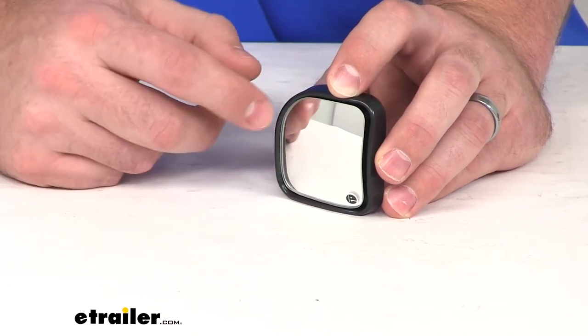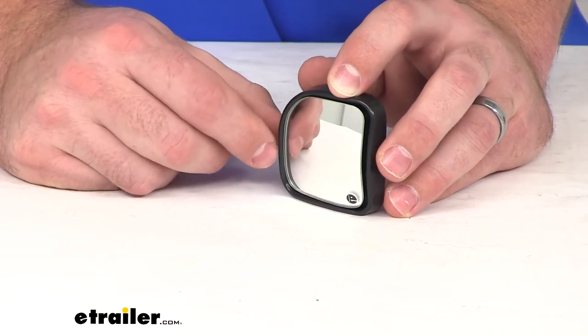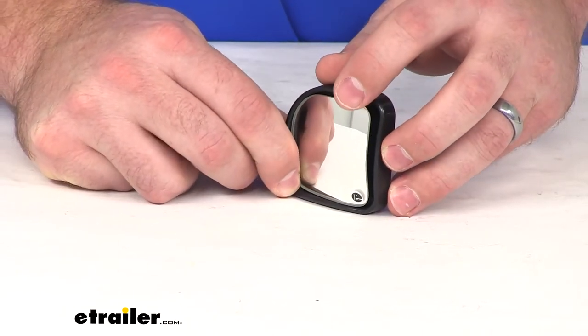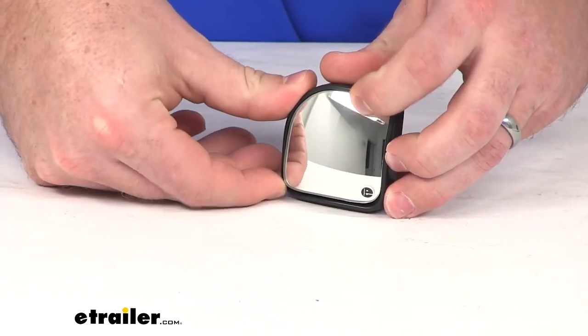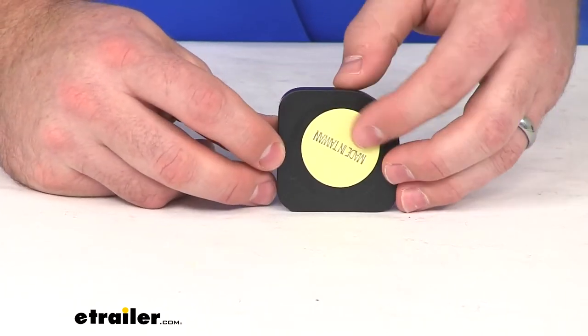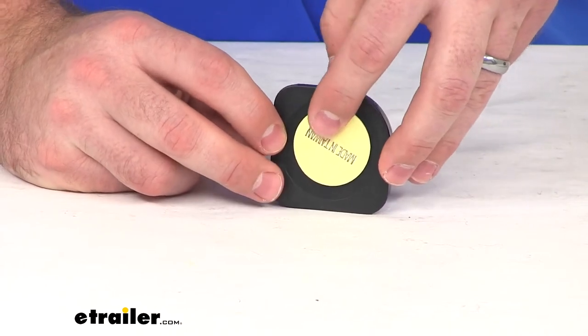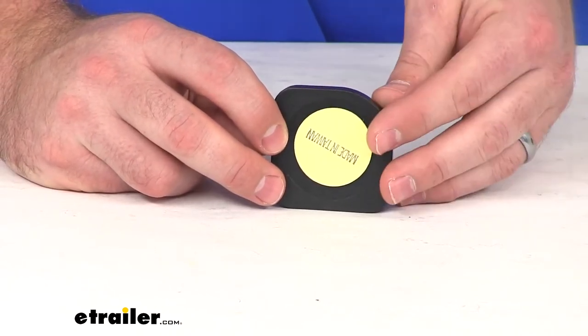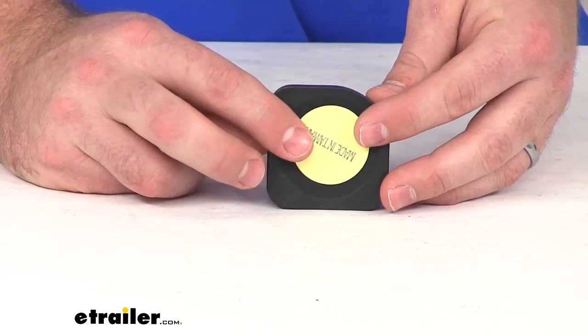This is a convex lens, so it's going to provide a nice wide angle. And it's also got a manual mirror face adjustment so that you can get that set up to just where you need it to be. On the back, we're going to have an adhesive backing so that you can get this mounted onto your factory side view mirror.